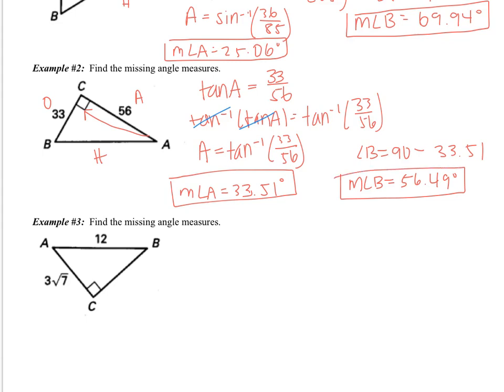I have a few comments for you. One, we should check to make sure that these answers make sense, so let's label them on the figure. I get angle A to be 33.51 degrees and angle B to be 56.49 degrees. My smaller side is located across from my smaller angle, and my bigger side is located across from my bigger angle — so that's a good sign. Also, you do not need to simplify the fraction before entering it into the calculator. And if you ever get an error message, it means you're putting something into the calculator wrong.